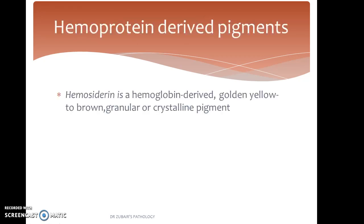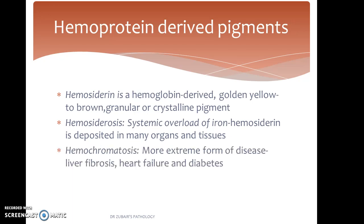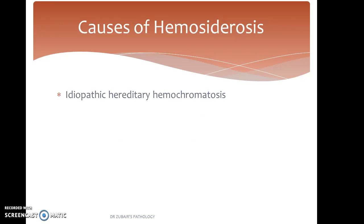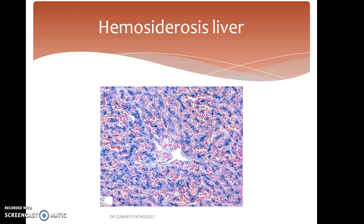Hemoprotein-derived pigments: Hemosiderin is a hemoglobin-derived golden yellow to brown granular or crystalline pigment. Hemosiderosis is the systemic overload of iron where hemosiderin is deposited in many organs and tissues. Hemochromatosis is a more extreme form of disease associated with liver fibrosis, heart failure, and diabetes. Causes include idiopathic hereditary hemochromatosis, chronic hemolytic anemias, sideroblastic anemias, alcoholic cirrhosis, and multiple blood transfusions — such as in thalassemia patients. In this liver section, we can appreciate the bluish pigment using the Perls Prussian blue stain.